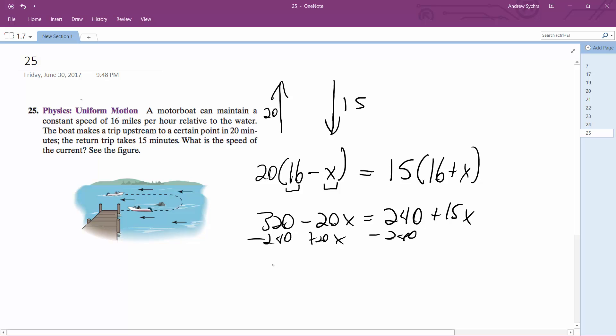Minus 240, so this becomes 80 equals 35X. 80 divided by 35, we end up with X equals 2.28571.